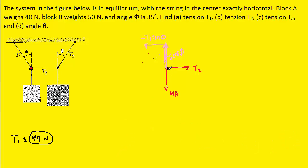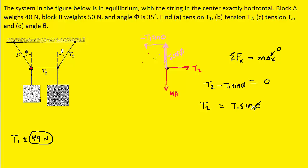Now we return to the same free body diagram and apply Newton's second law in the x direction. The sum of the forces in the x direction equals mass times acceleration in the x direction. The junction is not accelerating, so the right-hand side is zero again. The sum of the x-direction forces includes positive T2 and then minus T1 sine of phi. In part B, we're solving for T2, so we add T1 sine phi to the other side. Plugging in T1 as 49 newtons and phi as 35 degrees, we get approximately 28 newtons for T2, which is the correct answer to part B.